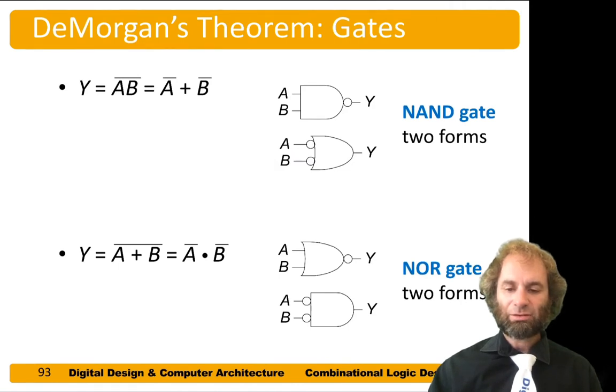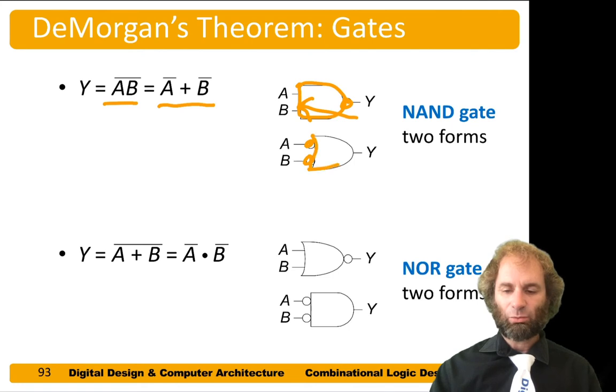I like to use De Morgan's law graphically whenever I can. From a graphical point of view, remember that NAND is equivalent to an OR of inverted inputs. Here I have my NAND. I push the bubble through and the bubble pops out on the inputs and the gate changes from an AND to an OR flavor.